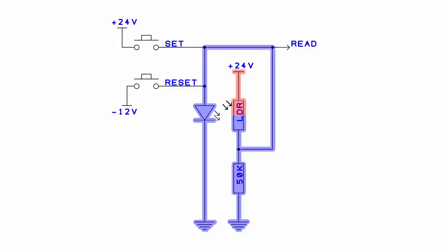We set or reset it by sending in a small pulse into the light source. If the light source is off and we send a 24 volt pulse, that turns it on, bringing the LDR value down low which holds the light source on. If the light source is on and we want to turn it off, we pulse negative 12 into that point, pulling voltage away from the light source.